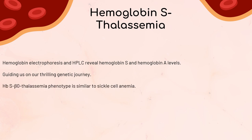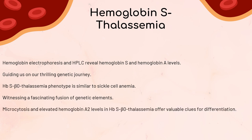When beta-0 thalassemia combines with hemoglobin S, the resulting phenotype is similar to sickle cell anemia. Both hemoglobin S beta-0 thalassemia and sickle cell anemia present severe painful crises as the predominant symptom. Yet microcytosis and an elevated hemoglobin A2 level in hemoglobin S beta-0 thalassemia offer valuable clues to differentiate it from typical sickle cell anemia.